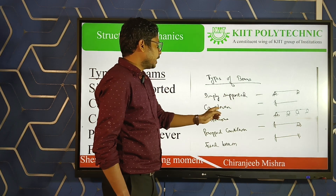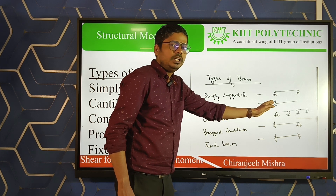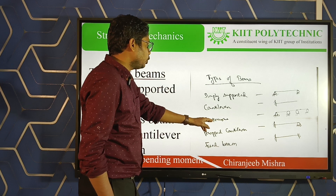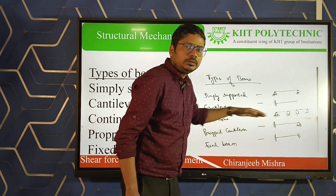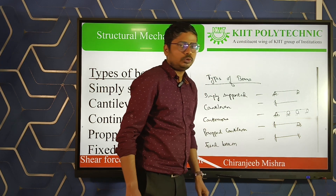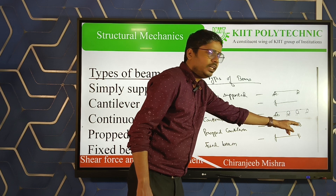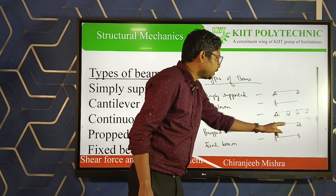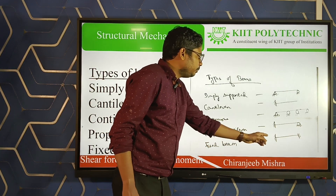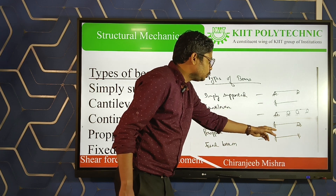In a cantilever beam, one end is completely free and the other end is fixed. A continuous beam has supports placed continuously — hinge support, then roller supports. A propped cantilever has one end fixed and the other end roller supported. A fixed beam has both ends fixed.